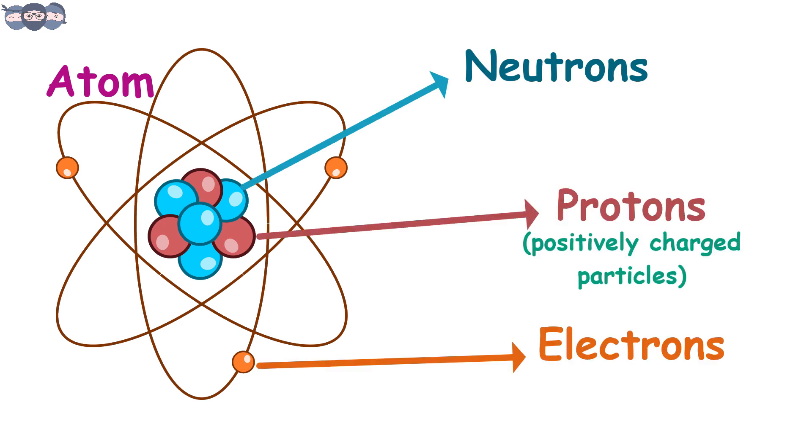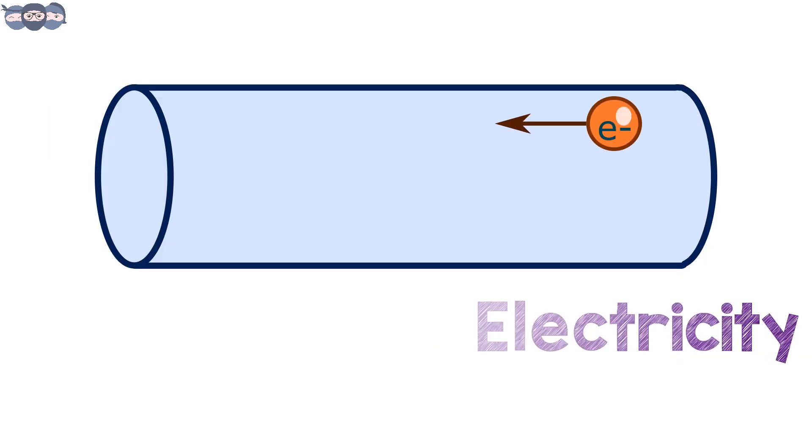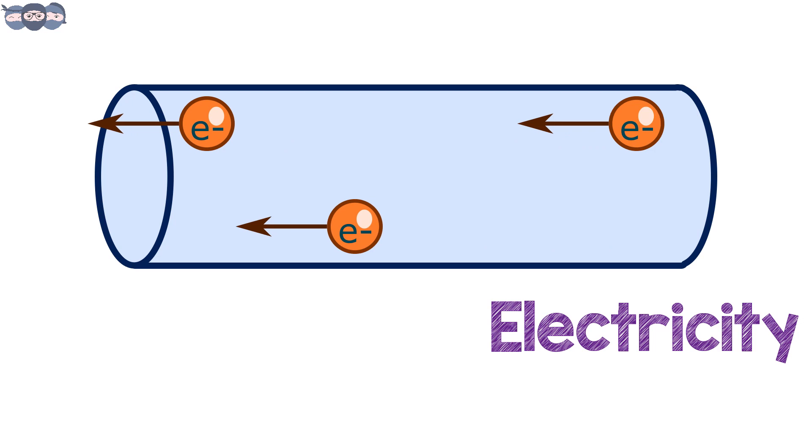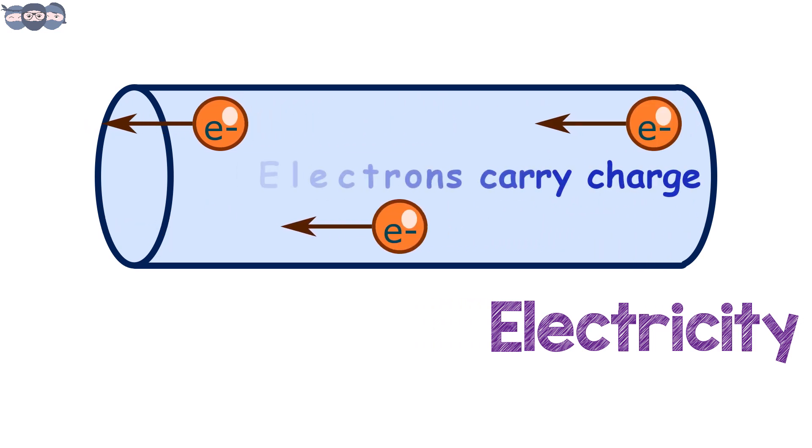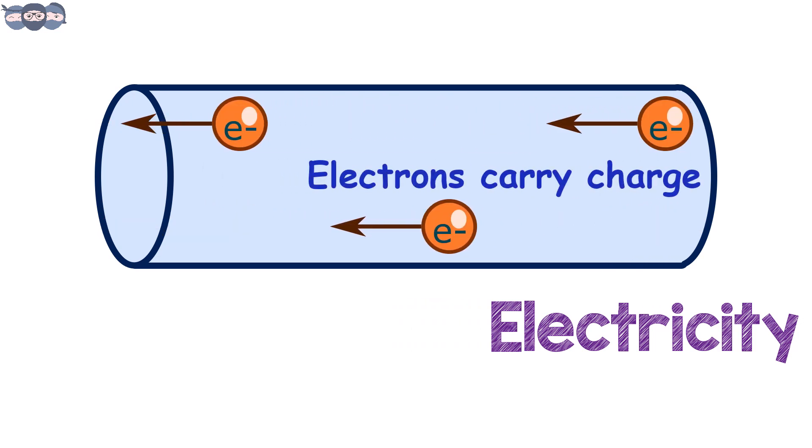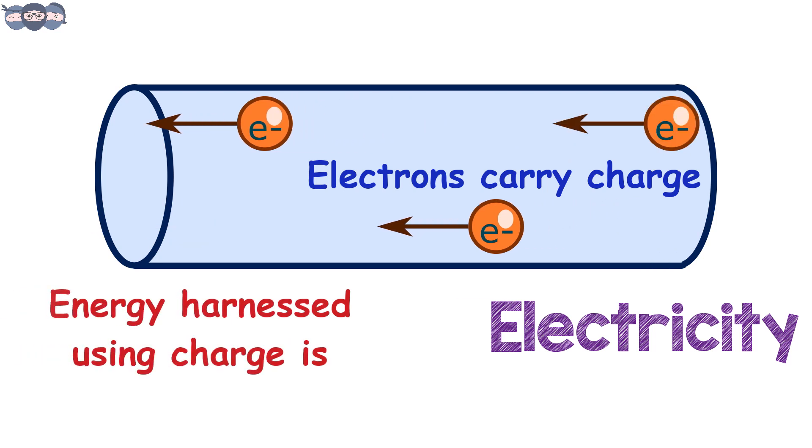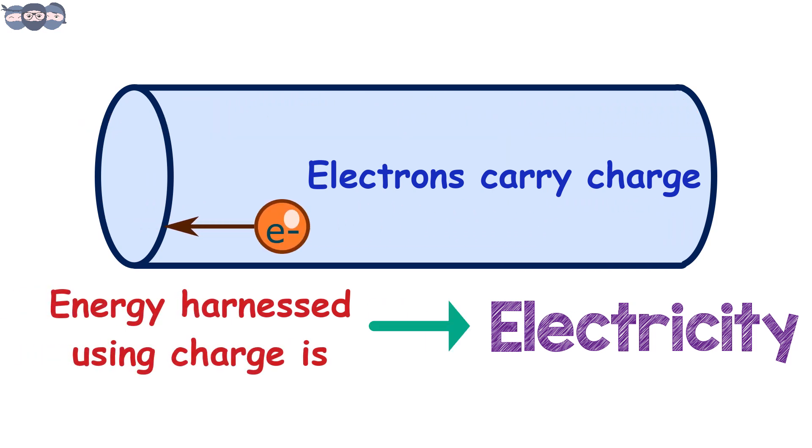Protons are positively charged and electrons are negatively charged. Electricity is nothing but the movement of these electrons. These electrons are charged particles, and basically this charge is used to harness energy, which is nothing but electricity.